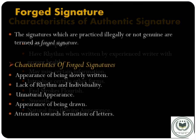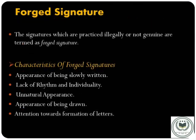Forgery in a strict sense is a legal term, and its use as a conclusion should probably be avoided by the questioned document examiner. Signatures that are practiced illegally or are not genuine are termed forged signatures. Characteristics of a forged signature include: appearance of being slowly written, lack of rhythm and individuality, unnatural appearance, appearance of being drawn, and attention towards the formation of letters. General indicators of a non-genuine signature may include blunt starts and stops, pen lifts and hesitation, tremor, patching, etc.